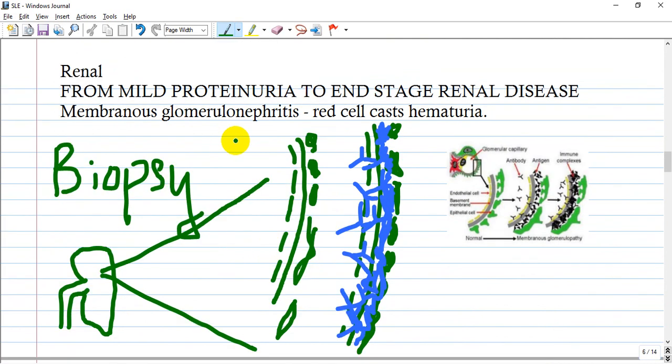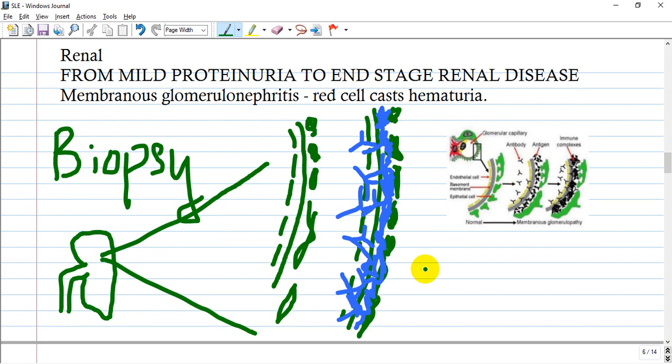What is the renal involvement? It can range from mild proteinuria to end-stage renal disease or terminal renal disease. It's called membranous glomerulonephritis with thick glomeruli. You see a picture here that shows how antigens and antibodies form immune complexes that deposit on the membrane of the glomeruli, and this impedes normal glomerular filtration.